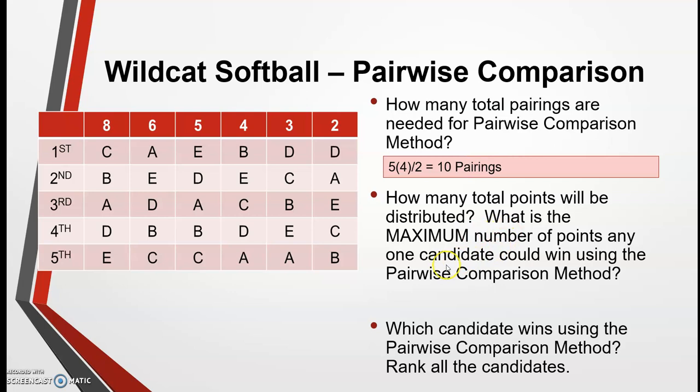No one candidate can earn all 10 of those points, because a candidate can only earn as many points as comparisons in which they are involved. If there are 5 candidates, all candidates will be compared with each other candidate but not themselves. So 5 minus 1, or 4 comparisons, is the maximum number for each candidate, and therefore 4 points is the maximum number of points for a single candidate.